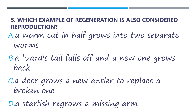Number 5. Which example of regeneration is also considered reproduction? A. A worm cut in half grows into two separate worms. B. A lizard's tail falls off and a new one grows back. C. A deer grows a new antler to replace a broken one. And letter D. A starfish regrows a missing arm.